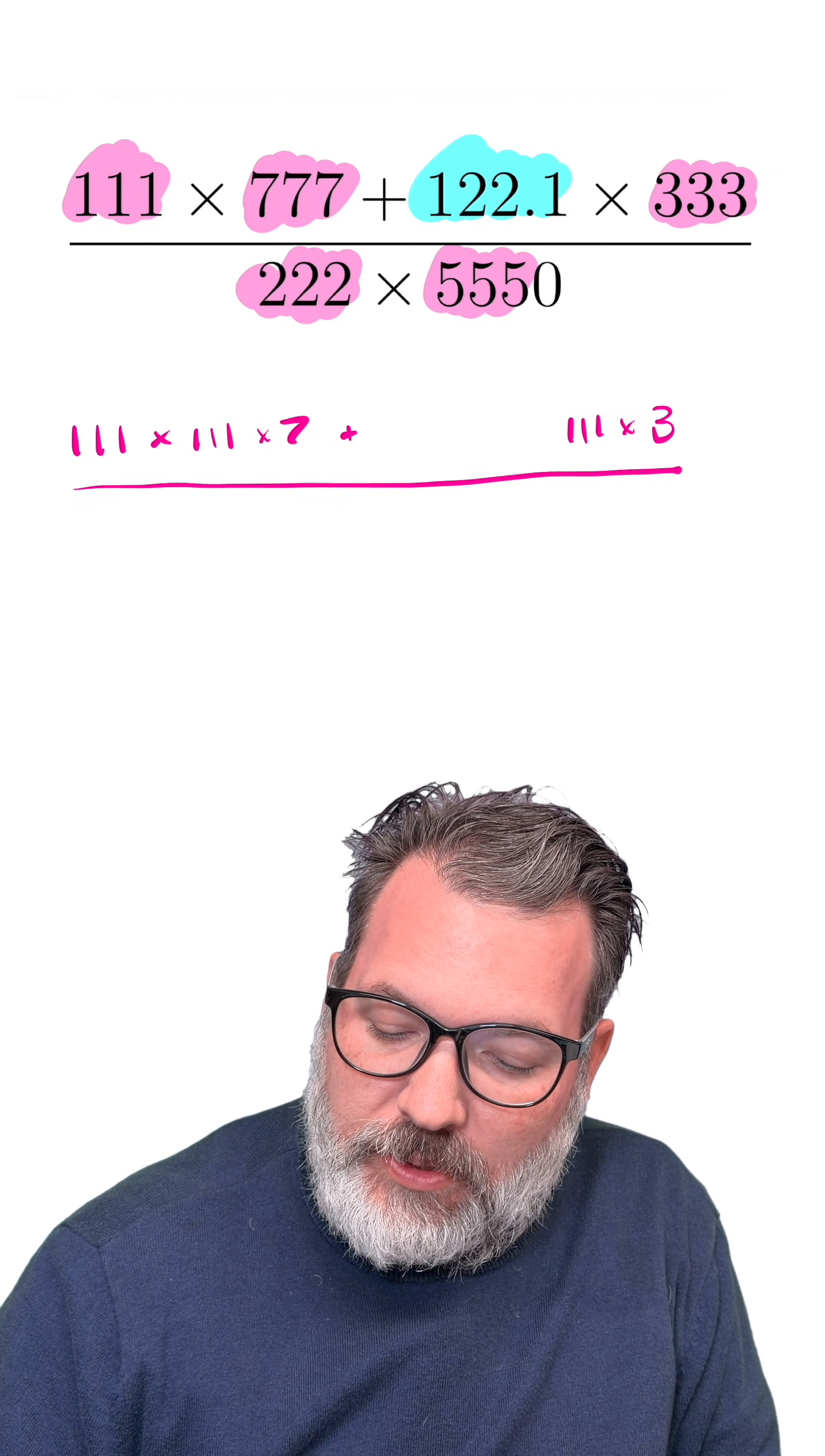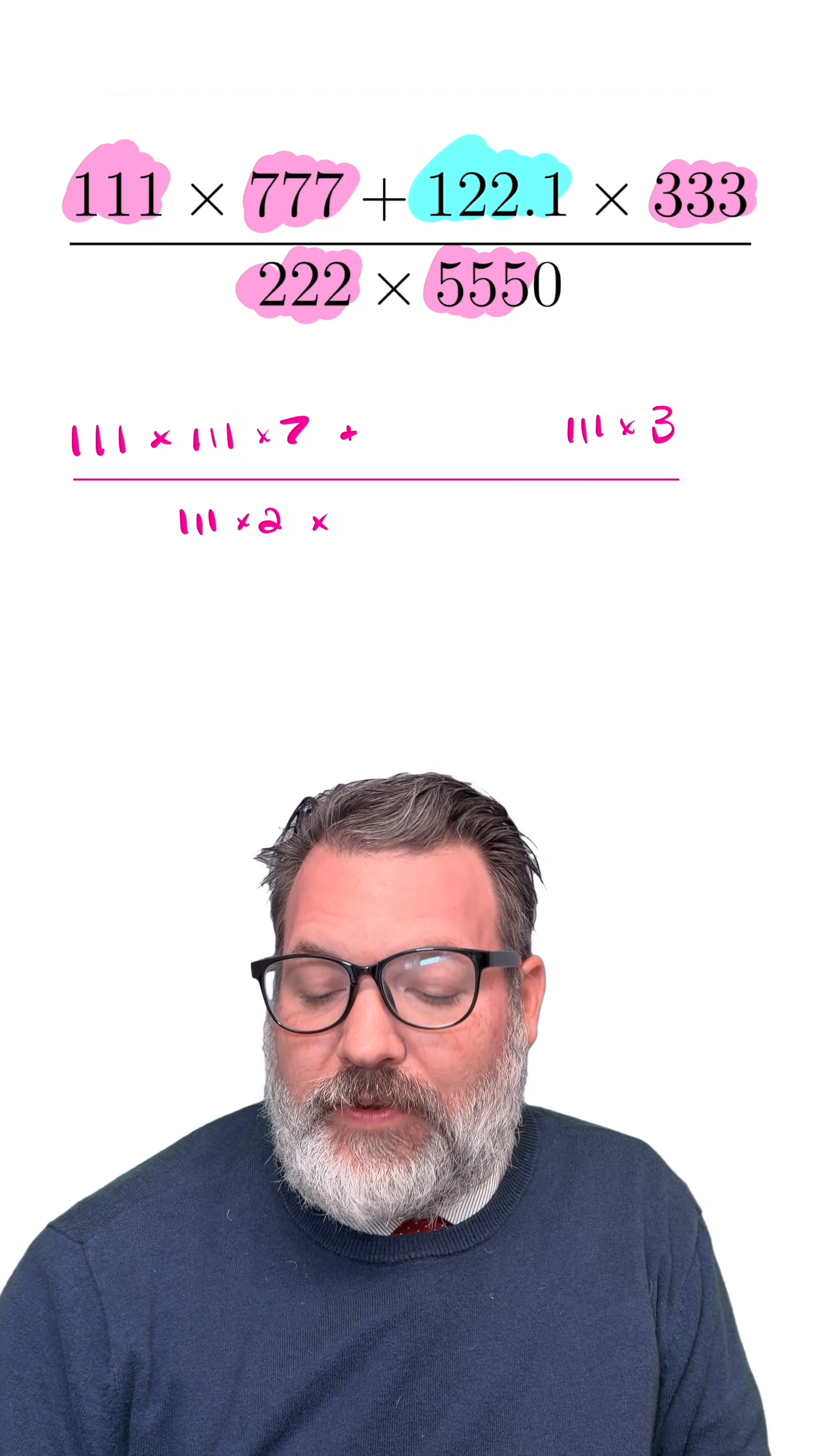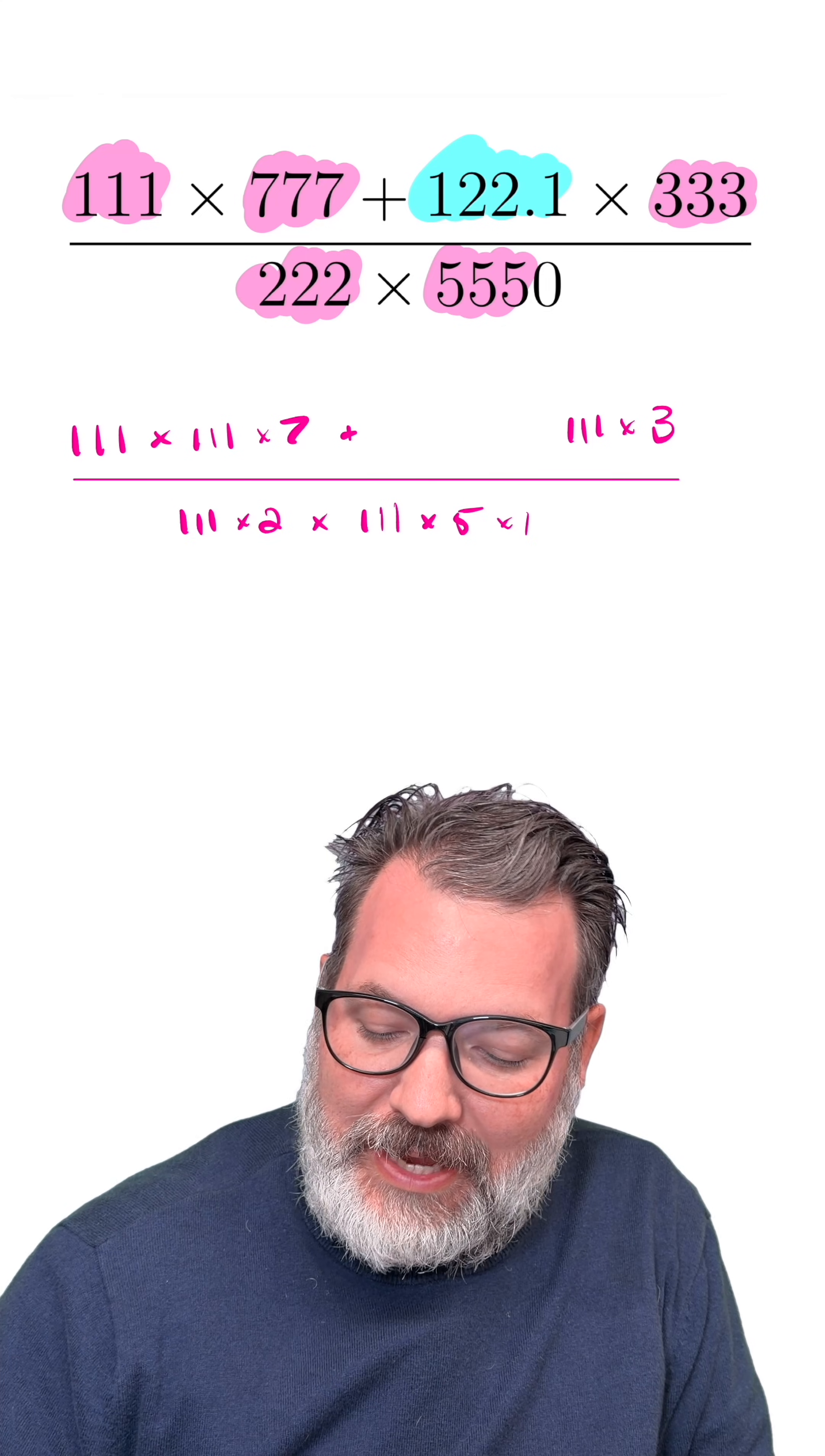In our denominator, similarly, 222 is the same thing as 111 times 2. And then 5550, notice there is a 0 at the end here, is going to be the same thing as 111 times 5 times 10.